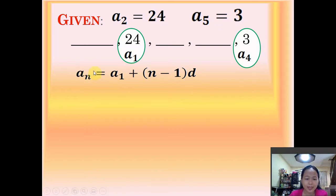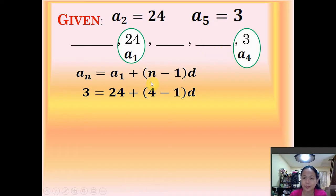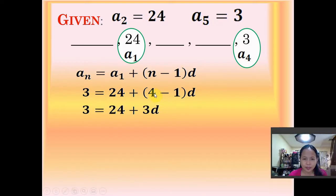Substituting into the formula: the n-th term is 3 (our last term), the temporary first term is 24, and the number of terms n is 4, since we have temporary first, second, third, and fourth terms. So we have 3 equals 24 plus quantity 4 minus 1 times d. We don't have the common difference, so the missing value is d. Simplifying, 4 minus 1 is 3 times d, giving us 3d.